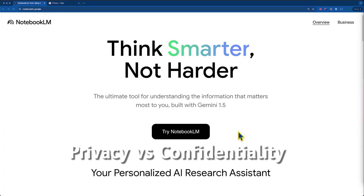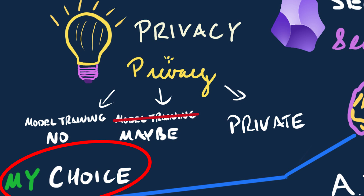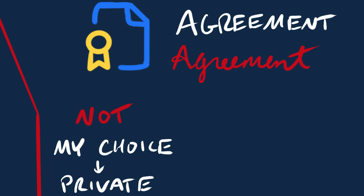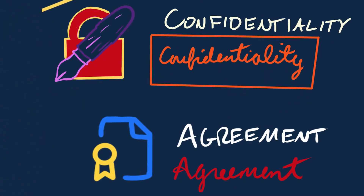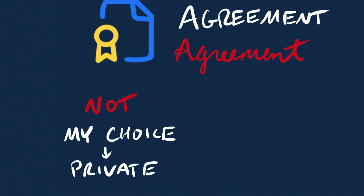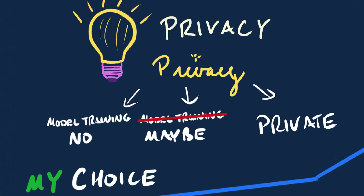Privacy is about your right to choose what happens to your information. In contrast, confidentiality is about a duty to protect information once it's been shared — to keep information secret from others. For example, if someone gives me information and tells me it's confidential, and I agree to maintain that confidentiality, I now have a duty to protect that information and prevent other people from seeing it. Privacy is about my own information and whether I choose to give it up. Note that these are not strict legal definitions, and the meaning of privacy versus confidentiality varies from country to country.